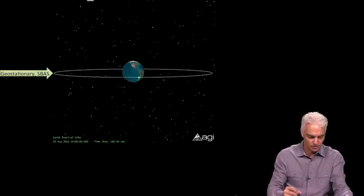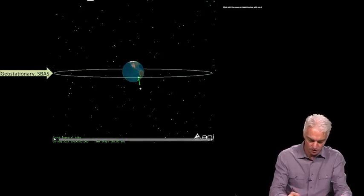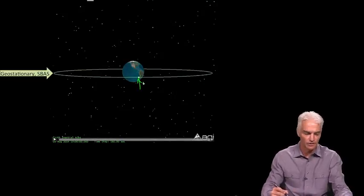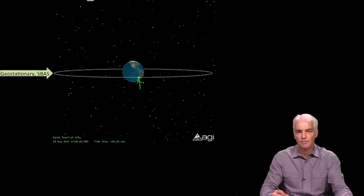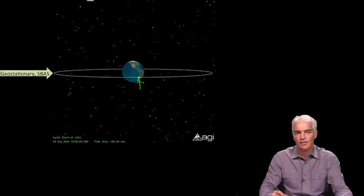So you can see it there. This is indeed one of the SBAS satellites, and that's at the geostationary orbital altitude which is chosen so that the orbital period matches the rotation period of the Earth.